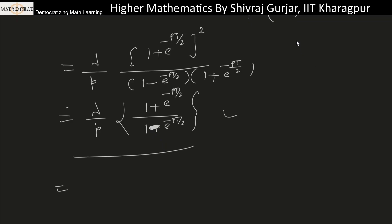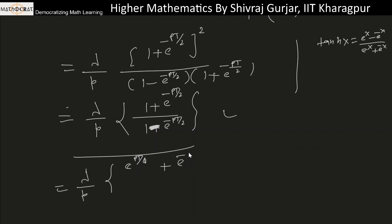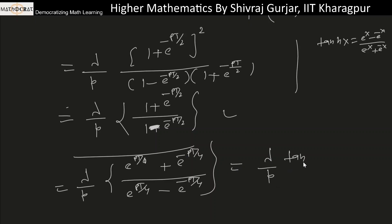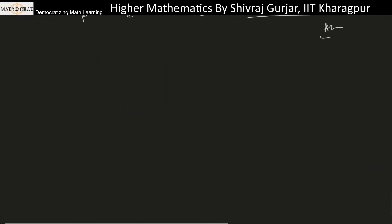We can further simplify using the hyperbolic tangent: tanh(x) = (e^x - e^(-x)) / (e^x + e^(-x)). Multiplying numerator and denominator by e^(pT/4), the expression (1 - e^(-pT/2)) / (1 + e^(-pT/2)) becomes tanh(pT/4). So the final answer is L{f(t)} = (λ/p) tanh(pT/4).